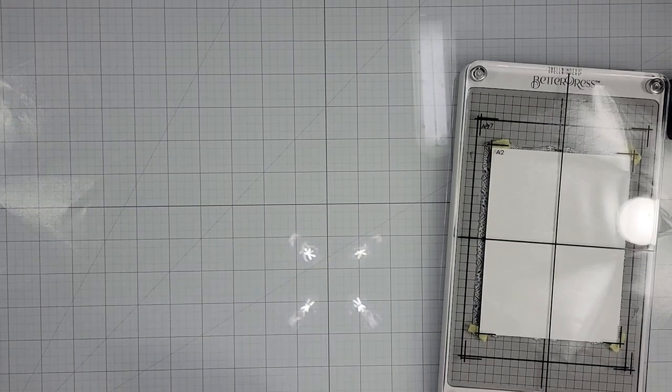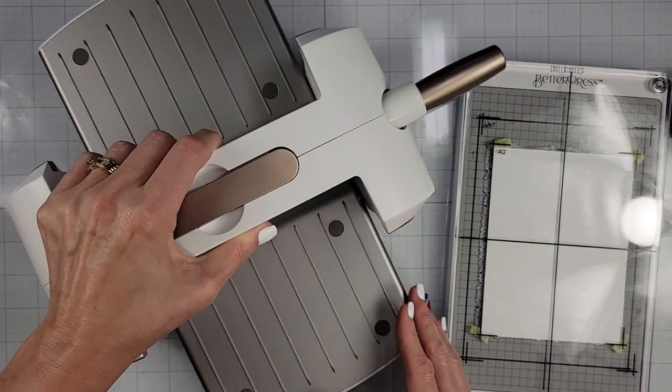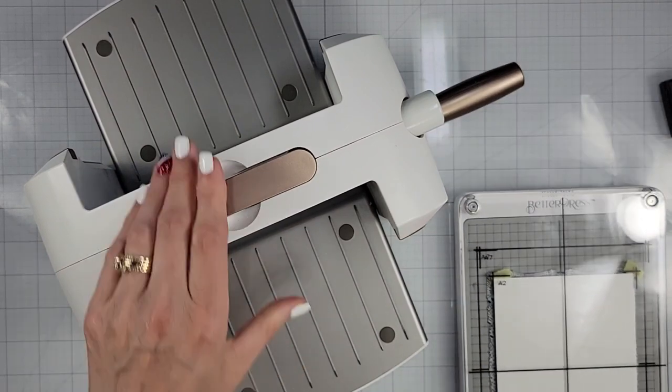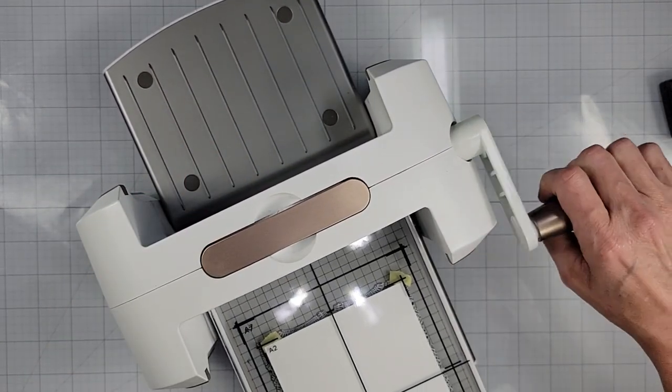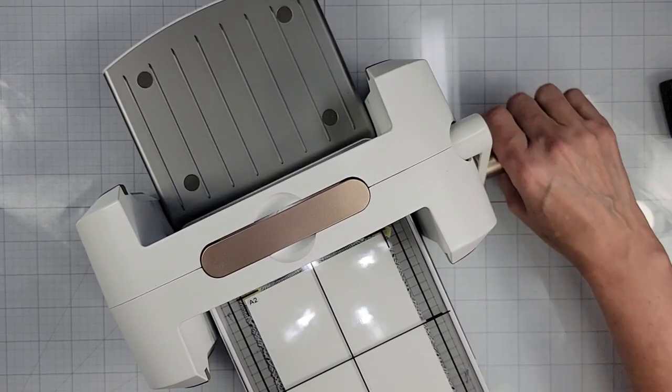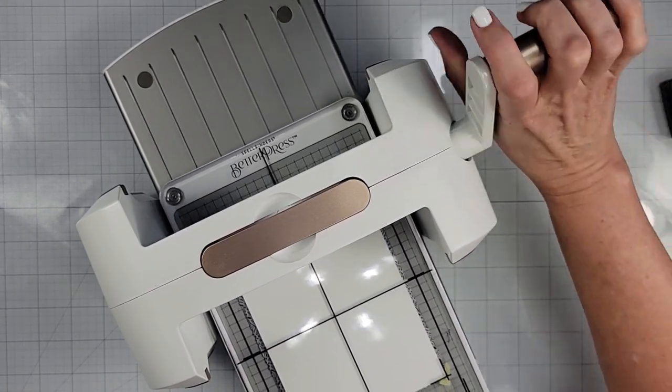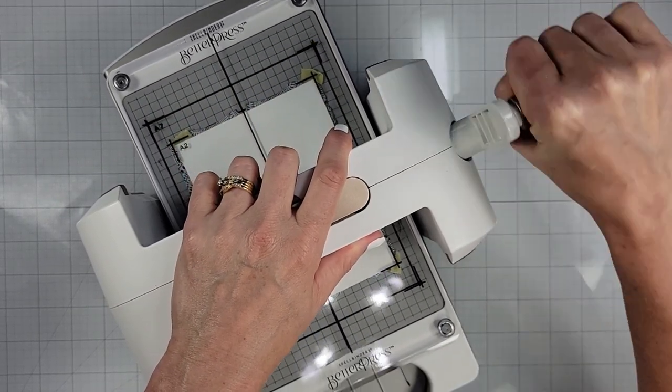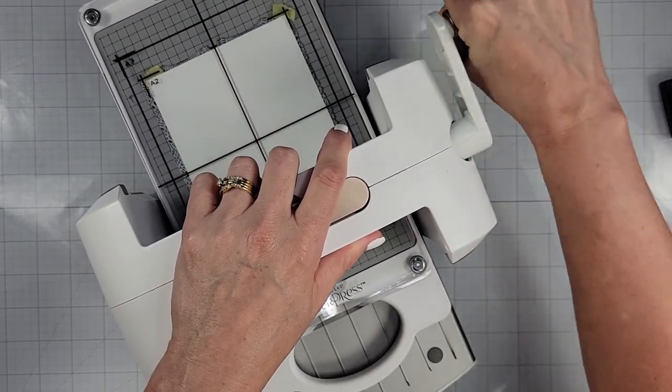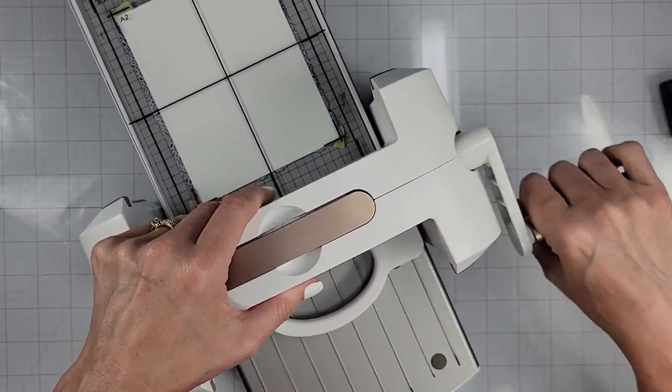So I'm just going to push that aside, grab my platinum six here. And they say, do not touch this when you run it through. So I'm just letting the machine, sorry, my machine is squeaky. I'm going to run that right through. Do not go back and forth, they say.